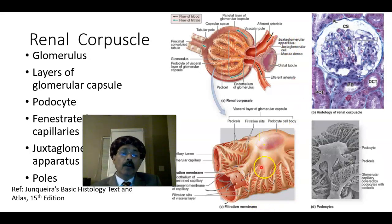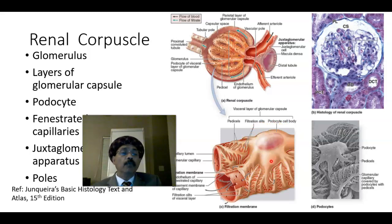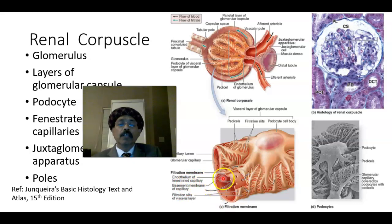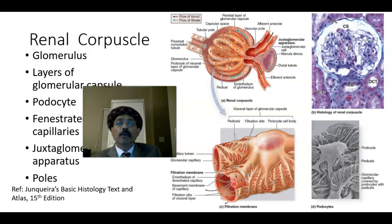The podocyte has many foot processes and forms the visceral layer of Bowman's capsule. Glomerular filtration is carried out by the endothelial cells, the basal lamina, and the podocytes — this is the filtration membrane. The capillaries are fenestrated, with many openings in the endothelium, covered by a very thin basal lamina and the podocytes.